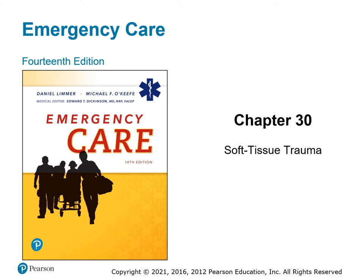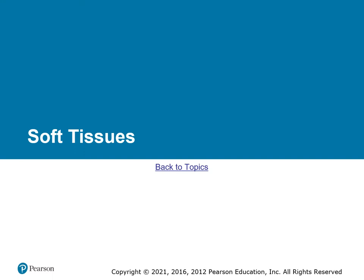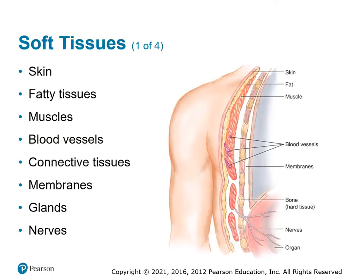Chapter 30: Soft Tissue Injuries. Let's talk about what soft tissue is. It is everything on the outside of the body — the skin, fatty tissues, muscles, blood vessels, connective tissue, all the membranes that hold everything together, our glands, our nerves — pretty much everything but the bones and the liquid in the body.